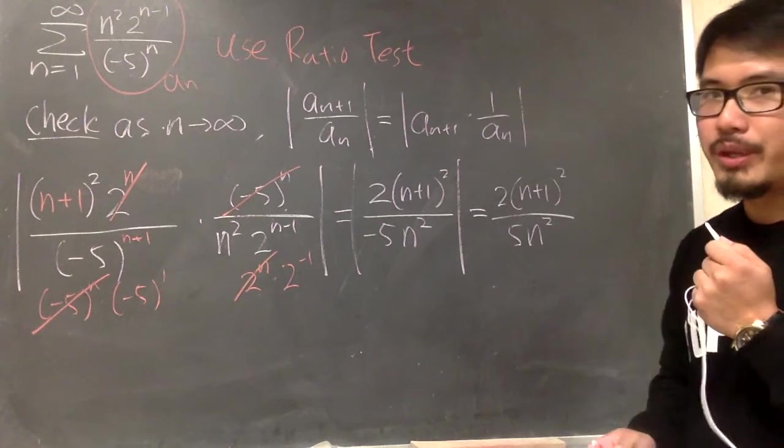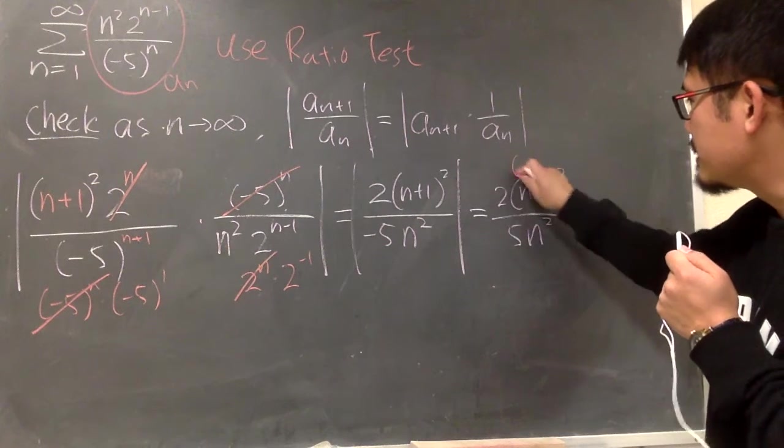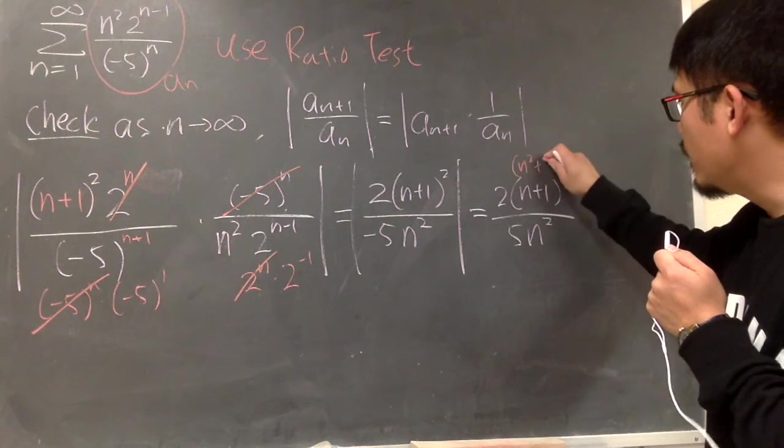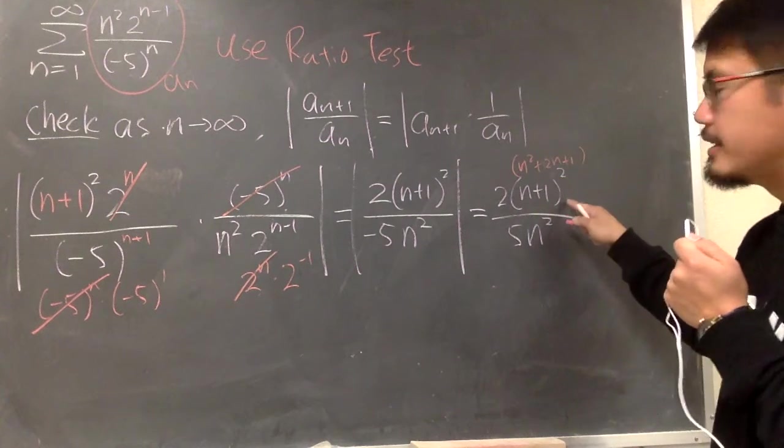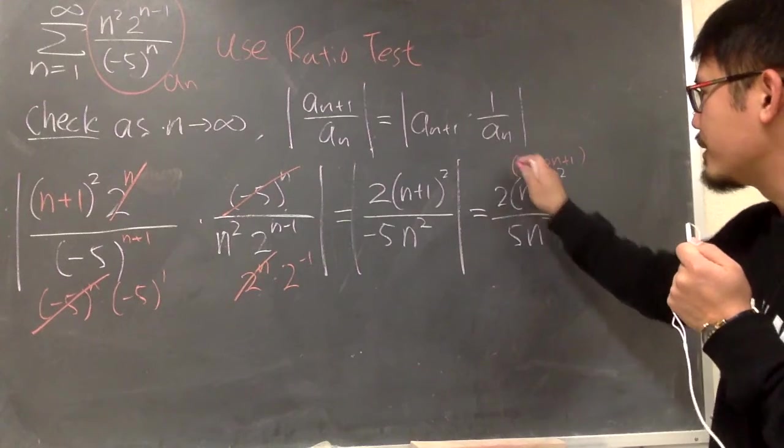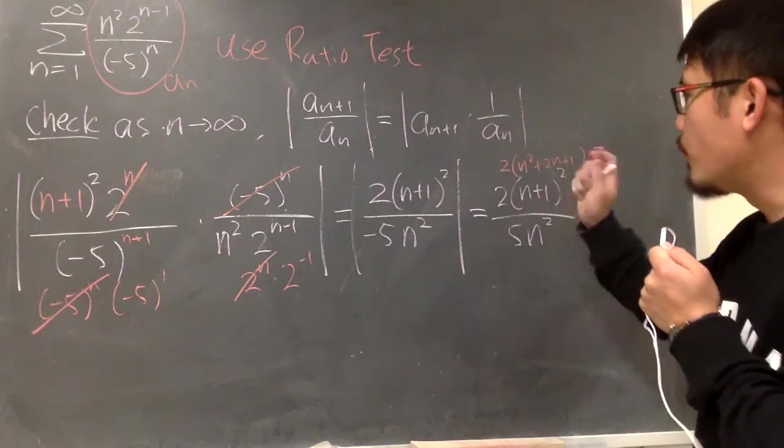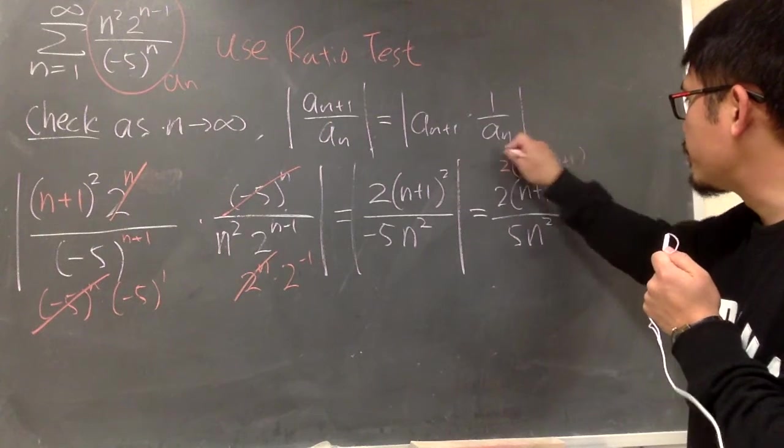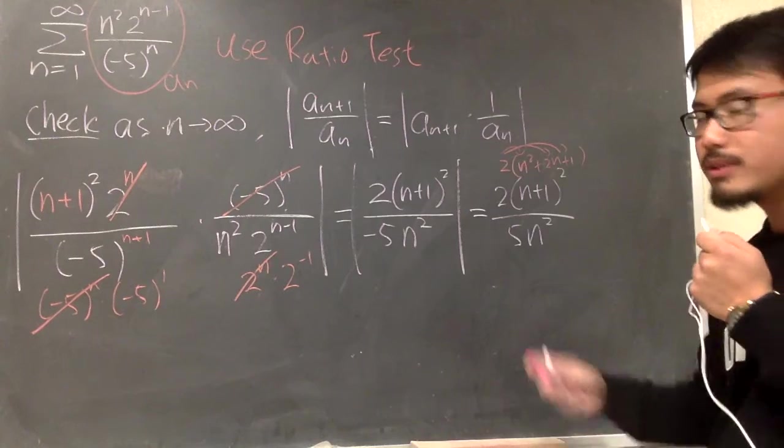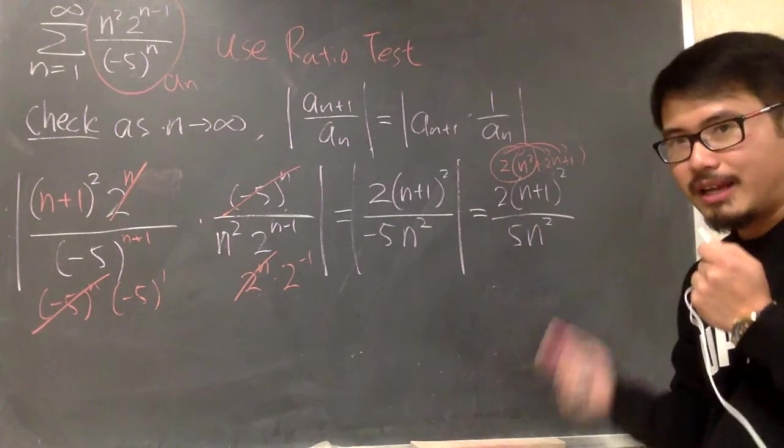On the top, what's the highest degree? You see, this is n plus 1 square. So this is the same as n square plus 2n plus 1, if you multiply this out. And then you have this 2 right here. So, on the top, what you care about is, after you distribute the 2 into the parentheses, you will care about the highest power, which is the 2 times n square.